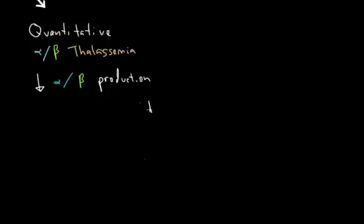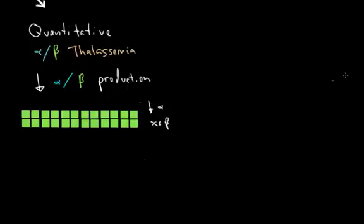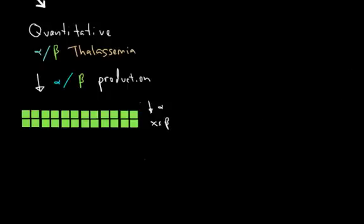For example, if the alpha genes were to have decreased production, we would have excess beta subunits, which would clump together like this. The same would be true for the alpha subunits, like this. In this case, we would have decreased beta and excess alpha subunits. The subunit which carries the deficit gives the condition its name. Thus, alpha thalassemias have a deficit in alpha subunit production, while beta thalassemias have a deficit in beta subunit production.